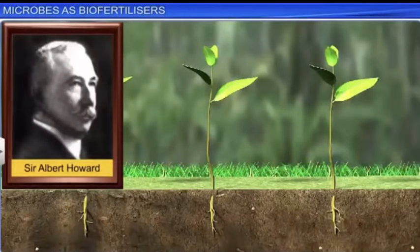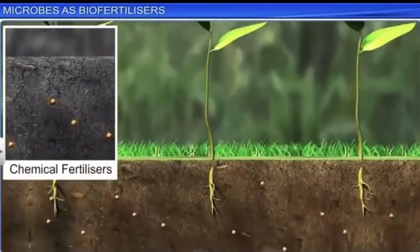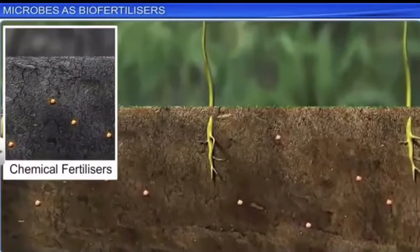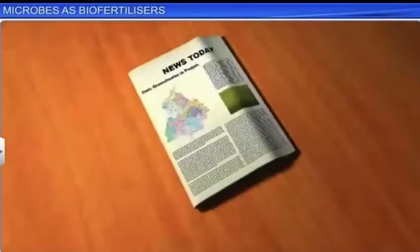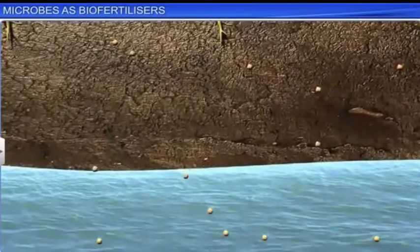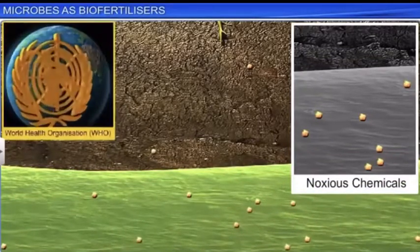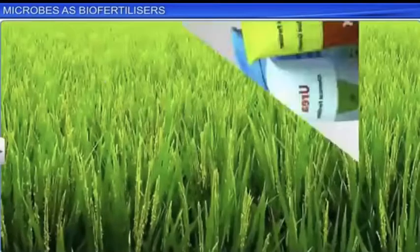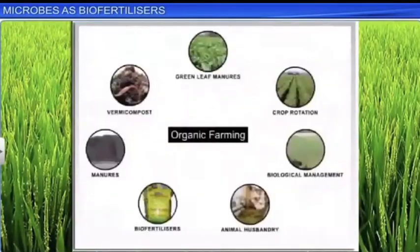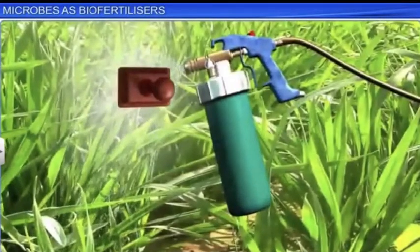But later, farmers and scientists around the world realized that chemical fertilizers were the chief pollutants of both the environment and soil. The impact of these fertilizers had become so severe that in Punjab, about 10% of groundwater samples show the presence of noxious chemicals above the permissible limit prescribed by the World Health Organization, or WHO. This paved the need for organic farming, wherein biofertilizers are used instead of synthetic chemical fertilizers.